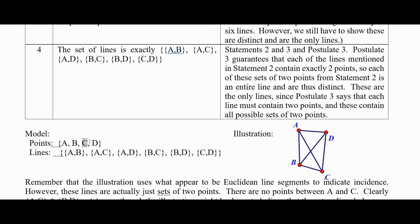And the illustration is over here. Remember, once again, this does not mean that these, what looks like Euclidean line segments are not actually part of the model in the sense that there are points in between. It just means that A and D are on the same line. In fact, that line is just the points A and D.